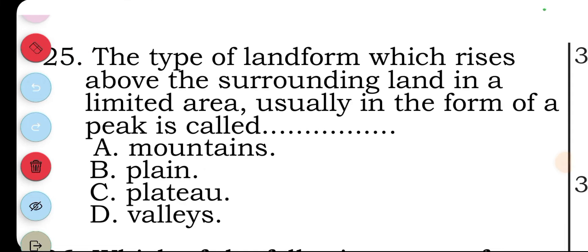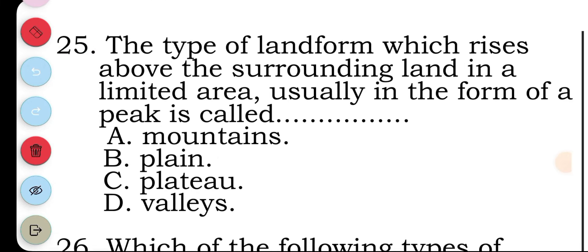Question twenty-five: the type of landform which rises above the surrounding land in a limited area, usually in the form of a peak, is called. We have: mountain, plain, plateau, valleys. The answer is A, mountain.